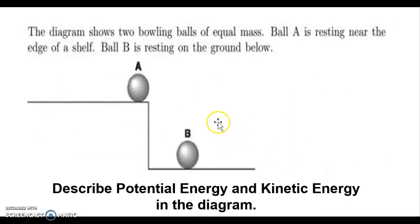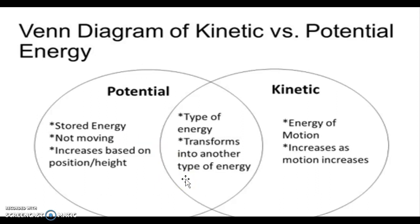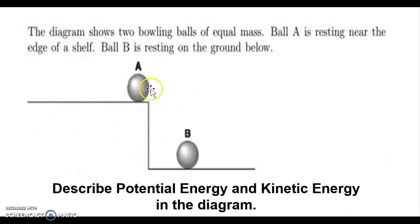Look at this example. The diagram shows two bowling balls of equal mass. Ball A is resting near the edge of a shelf whereas ball B is resting on the ground below. They have equal mass; the only difference is the height from the ground. Since potential energy increases based on position and height, ball A has more potential energy based on its position because it has height, compared to B which does not have height.